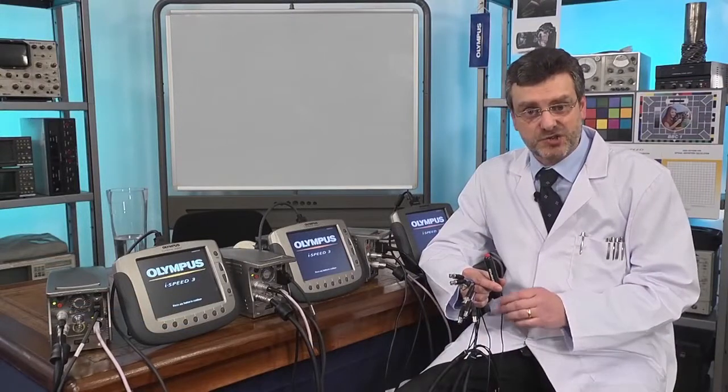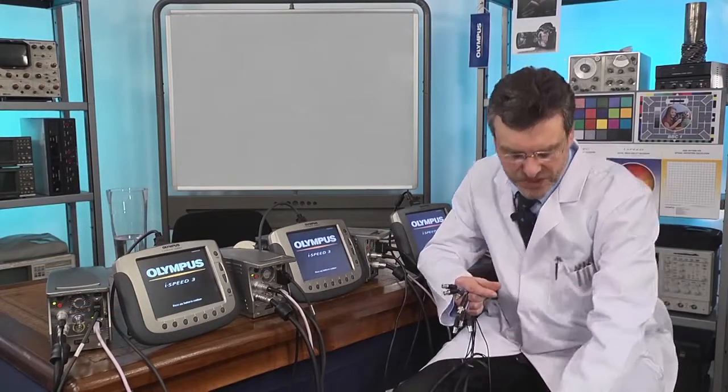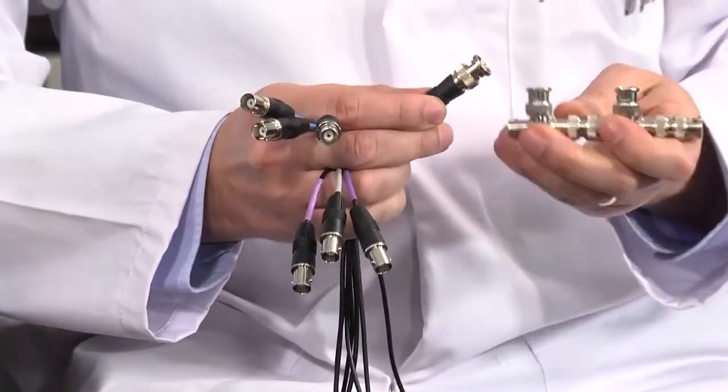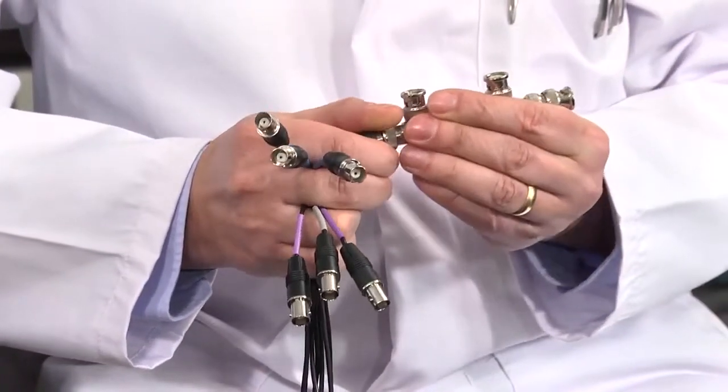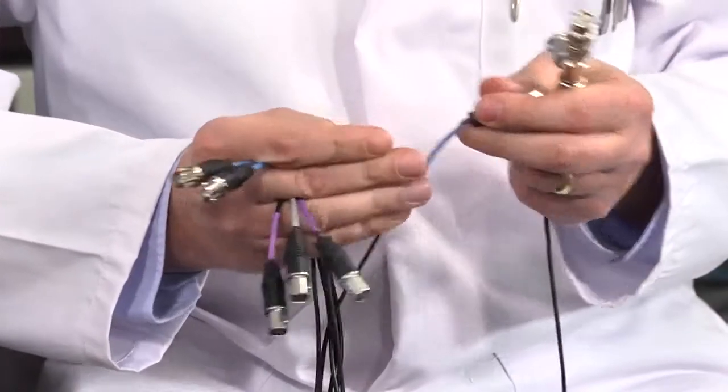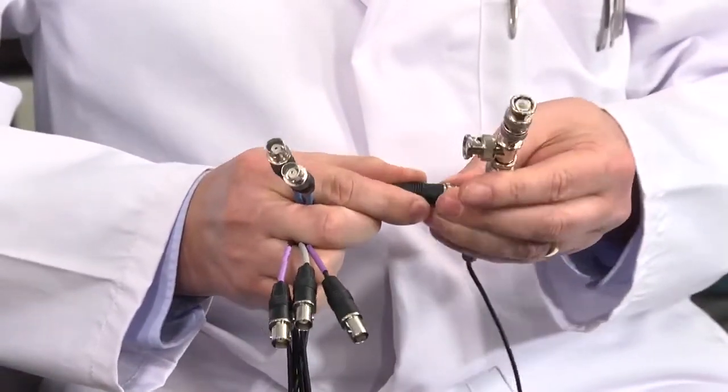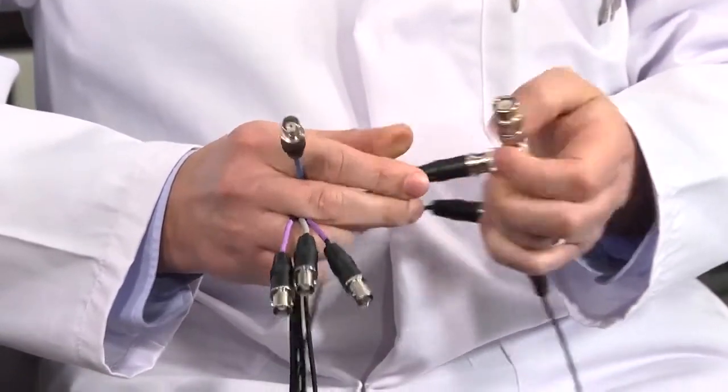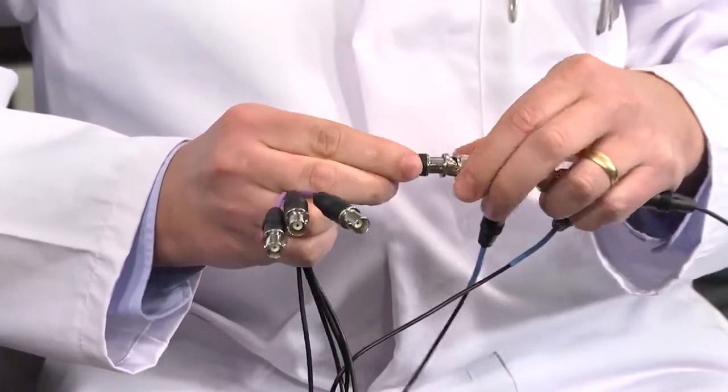I'm going to start by connecting the trigger system together to the pickle switch. I'm going to use this chain of BNC adapters to connect the pickle switch onto the input and then I'm connecting the trigger input from each camera to my chain of BNC adapters. That was one, this is camera two and this is camera three.